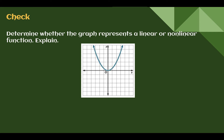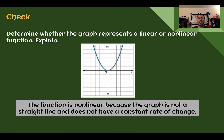Check your understanding: determine whether the graph represents a linear or non-linear function and explain. The answer is non-linear because it's not a straight line — it does not have a constant rate of change throughout. Down in one area the rate of change is negative, here it is positive, and in another section the rate of change is slower. Not a straight line, so non-linear.